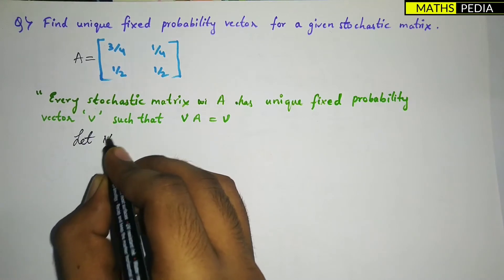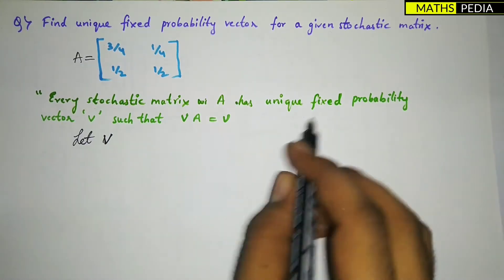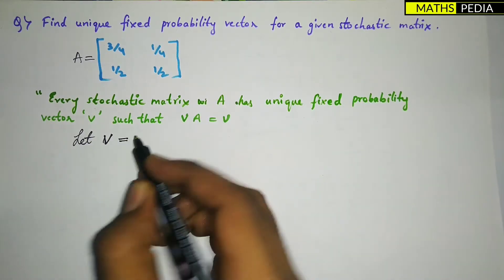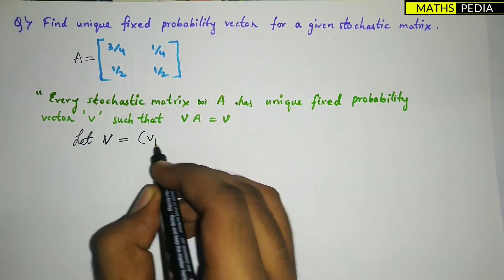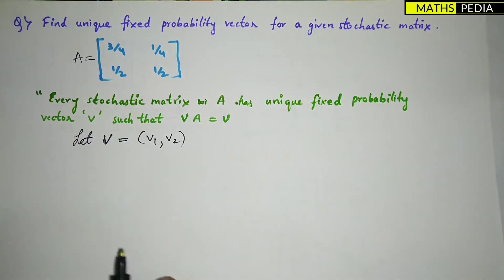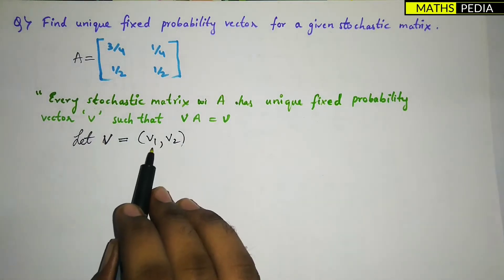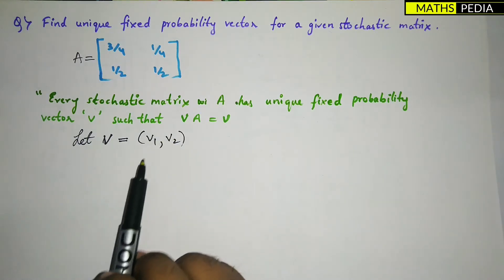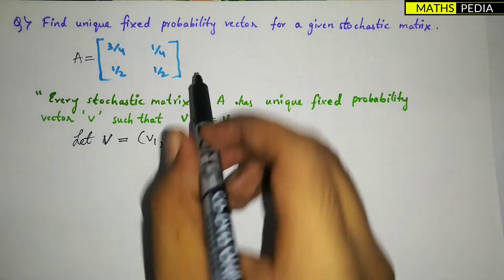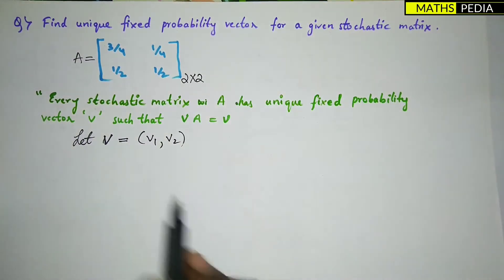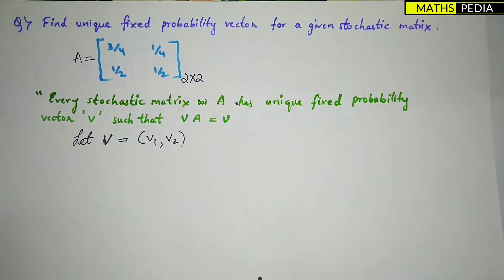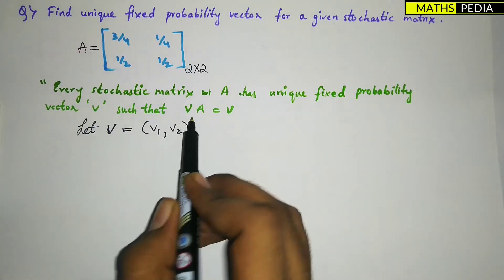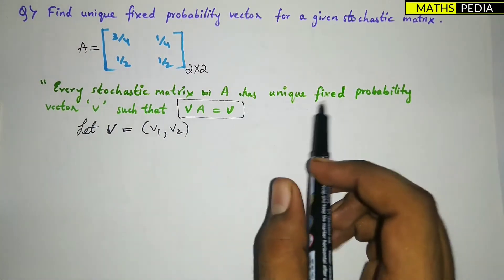Let V be the unique fixed probability vector such that V equals (V1, V2). We are assuming only two variables V1 and V2, since this is a 2×2 matrix.